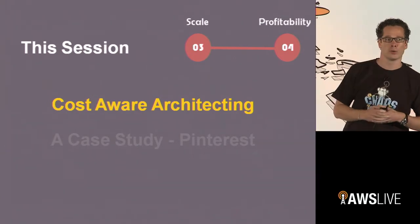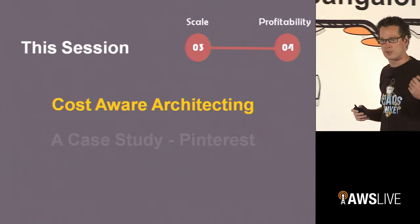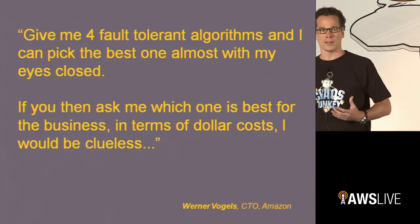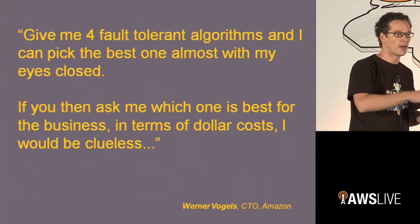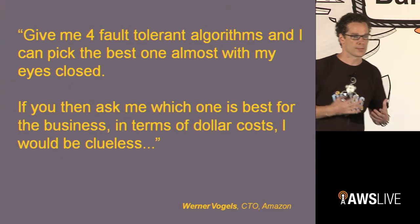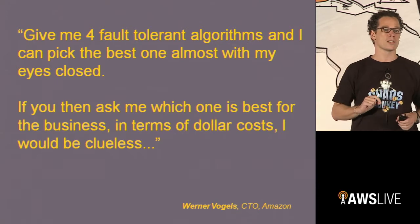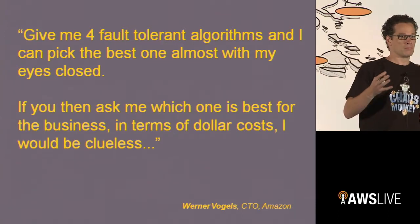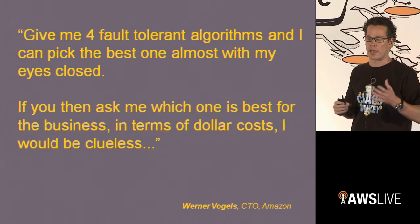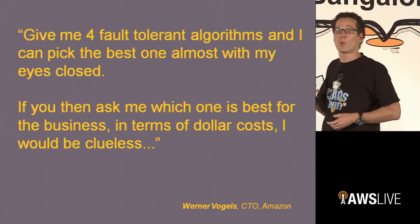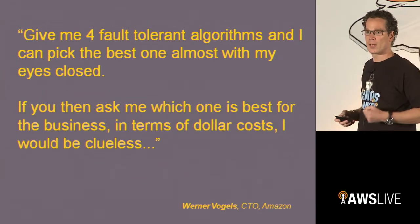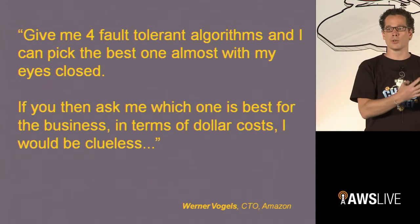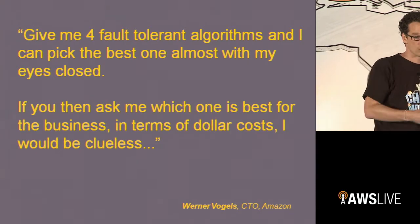Werner Vogels spoke on stage somewhere and said the following. Obviously he's an engineer, and engineers are focused on building great, highly available, secure apps and software. They don't always think consciously about cost. Show me a number of fault-tolerant algorithms and I can pick the best one with my eyes closed. But ask me what makes most sense for the business and that's a lot harder. So one of the things we're saying — and what Shekhar from Excel was saying as well — is we help by coming in with our solution architects to help you think about costs and actually help you reduce those costs.